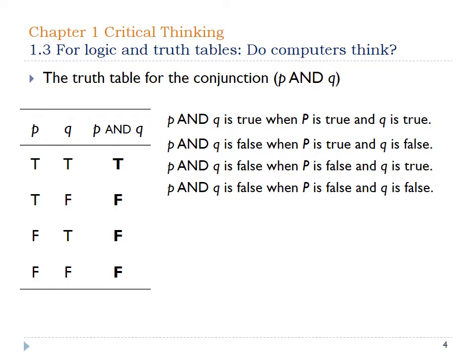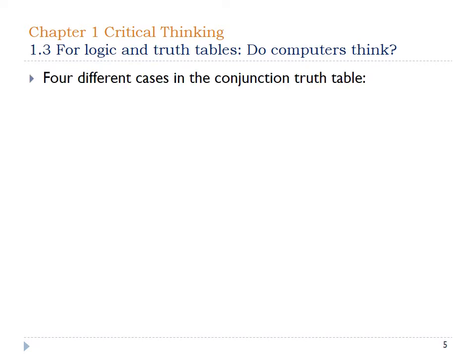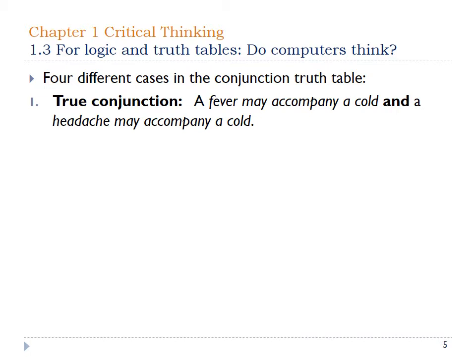That's where the red butterfly example comes in. The only case that gives you what you want is where it's both red and a butterfly. If it's red but not a butterfly, I don't want it. If it's not red but is a butterfly, I don't want it. If it's neither, I obviously really don't want it. So there are four different cases in the conjunction table.